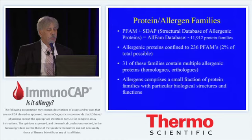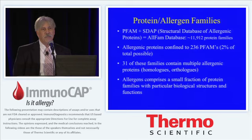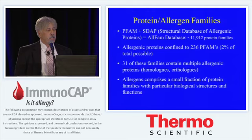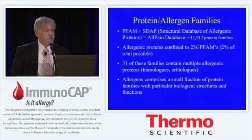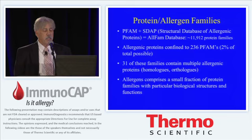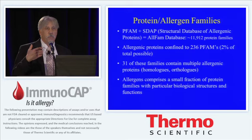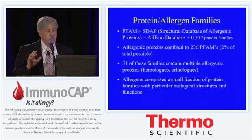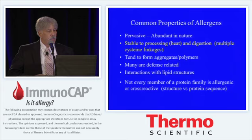If you look at the structural database for allergenic proteins mapped with the protein family database, you come up with about 12,000 protein families in our knowledge base. Of those, 236 families have allergenic proteins associated with them, or 2%. Of these, 31 families contain multiple allergenic proteins which we consider homologues or orthologues. So the allergens comprise a very small fraction of the protein families and are defined into certain families based on their biological structure and function.